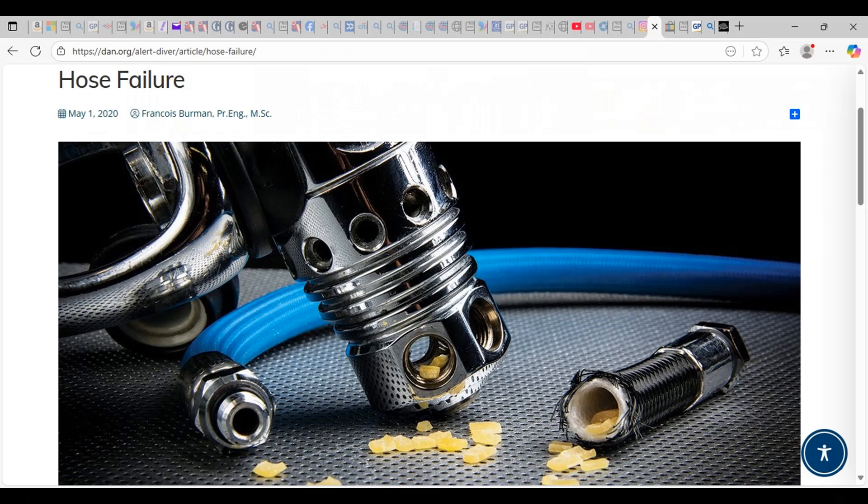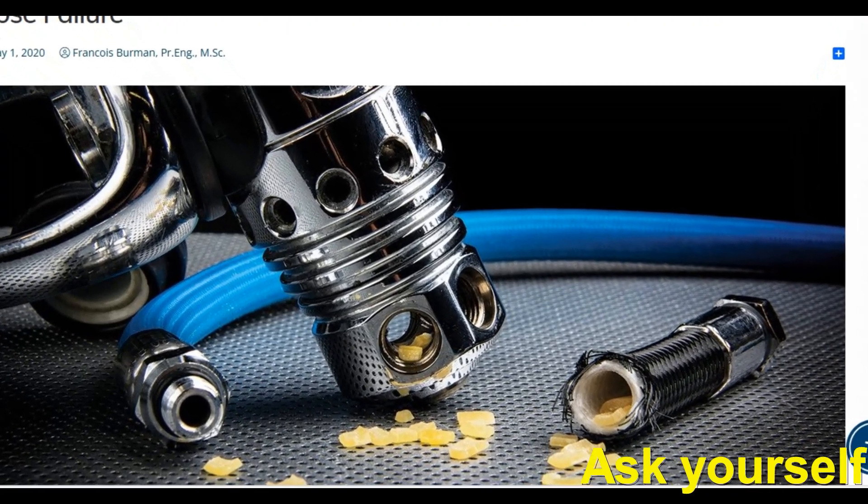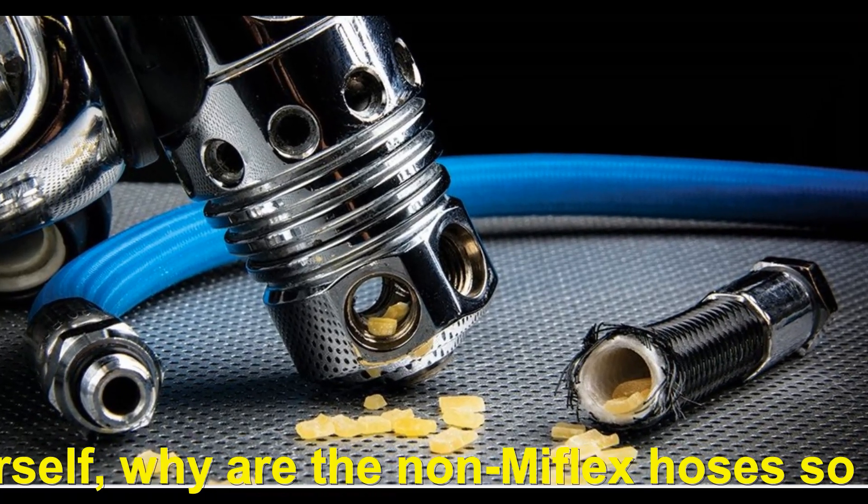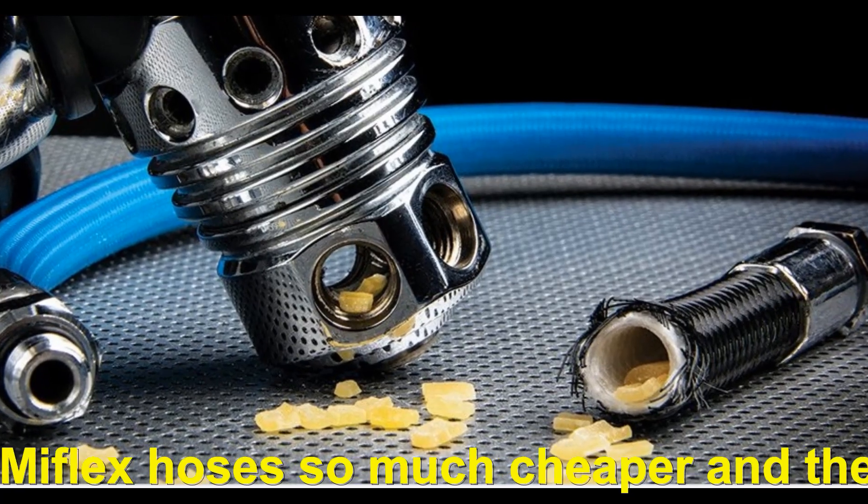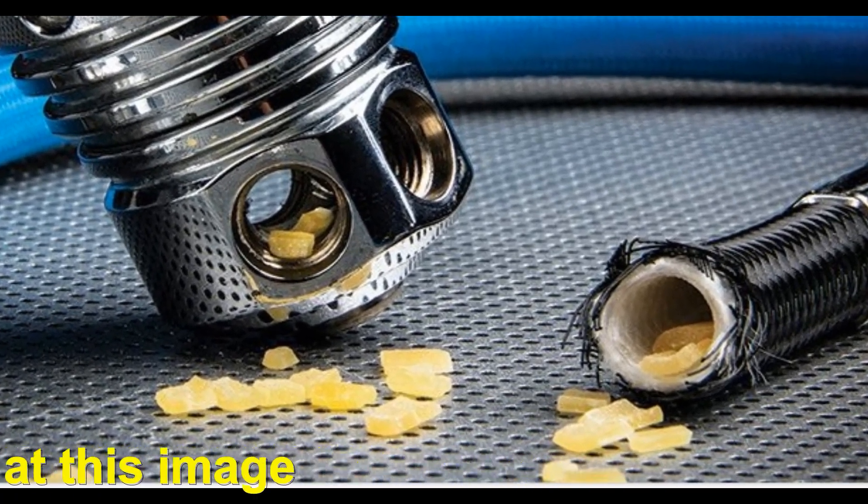Then in the mid 2010s, braided hoses took another hit when it was discovered that some braided hoses had an inside core underneath the braided outer material that could crumble. And so this was discussed in a number of DAN articles.